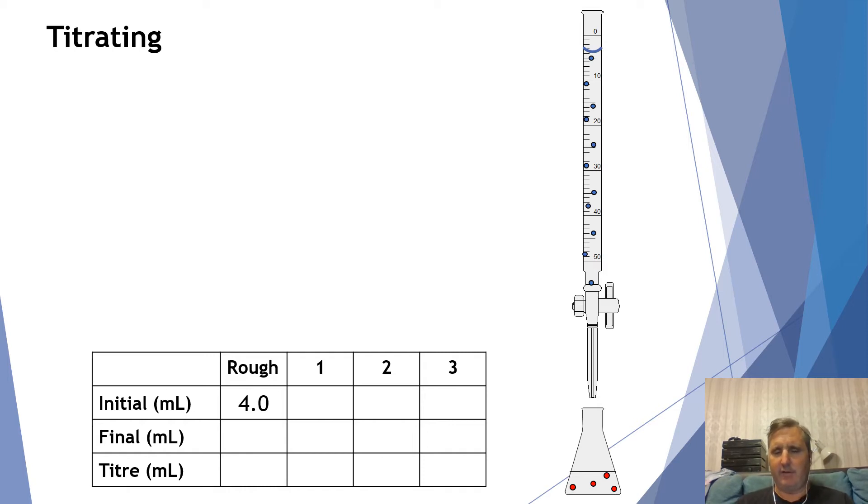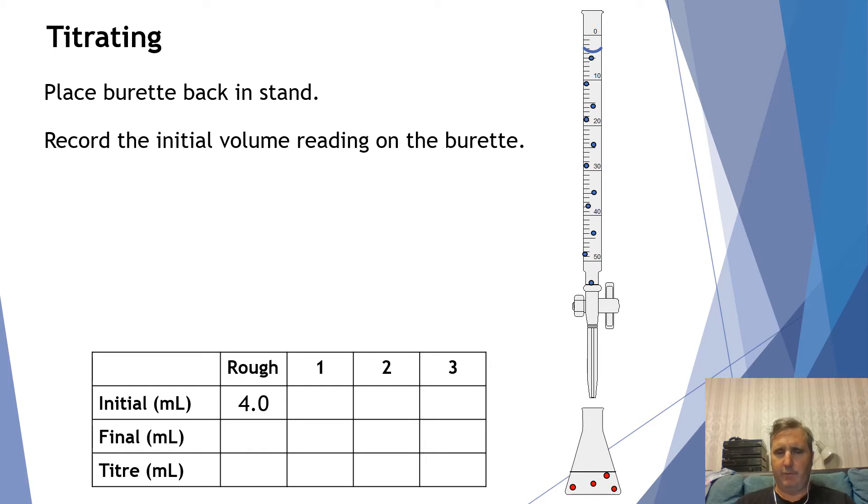In this case, the indicator solution for a start is colourless. So I'm going to add from the burette here. First I'm going to take the initial volume which is 4.0 milliliters. So I'm looking right at the bottom of the meniscus and where it lines up with the scale on the left here. So that's 4.0 milliliters.